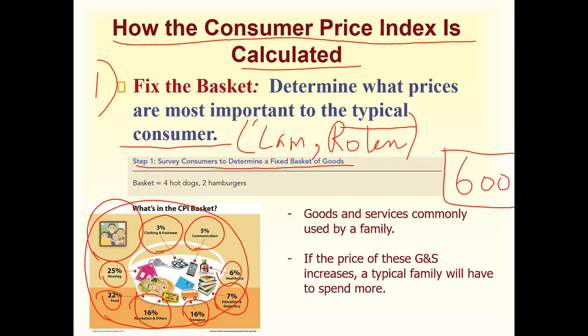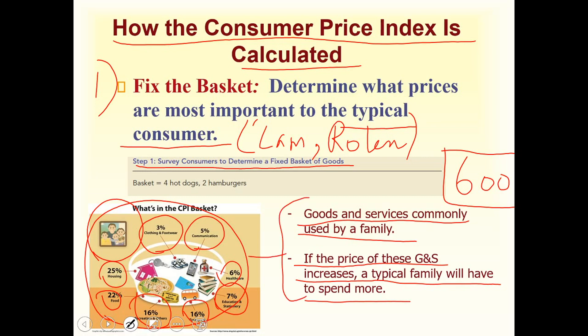This is how a typical consumer in the United States or another country would spend their income. The basket includes things like an iPhone for communication, shoes for clothing, various foods, housing rents, and books for education. Whenever the prices of these goods increase or decrease, the inflation rate changes. If prices rise, a typical family will have to spend more.